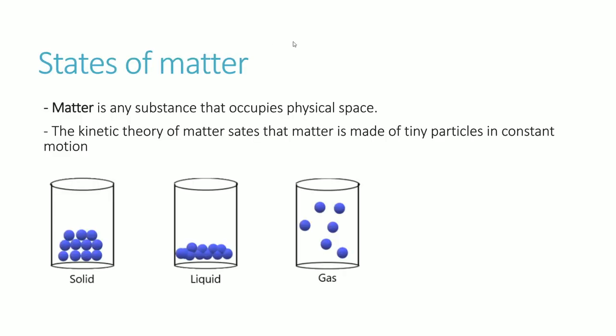Matter is any substance that occupies physical space, so everything that you can see and everything that exists in the universe is made of matter. Matter can be arranged in different ways, and that's where the idea of the kinetic theory comes into play, which states that matter is made of tiny particles that are in constant motion.